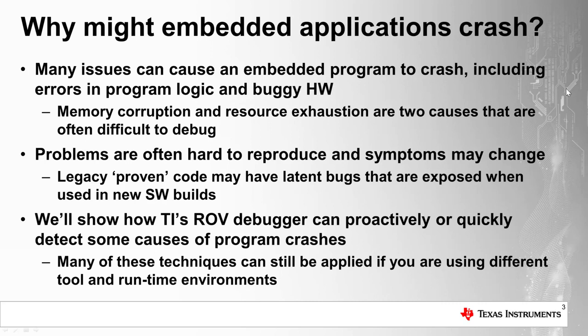These types of problems are particularly difficult to debug because they are hard to reproduce — they may take a long time to occur, such as in a slow memory leak, or there may be specific circumstances that trigger them. For example, a real-time deadline might only be missed under very specific circumstances caused by a rare sequence of events.